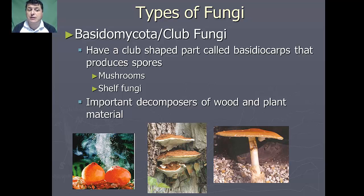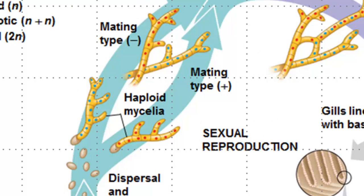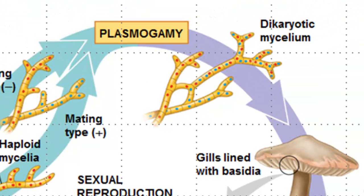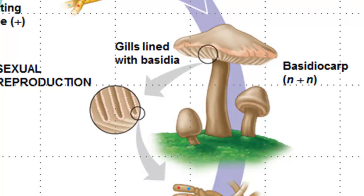These are very important decomposers of wood and plant material. Reproduction in our basidiomycota is primarily sexual. Two haploid mycelia of different types, the plus and the minus, are going to undergo plasmogamy and fuse, forming a dikaryotic mycelium. These dikaryotic mycelium are going to grow faster than and ultimately overcrowd the haploid parents. Environmental cues such as rain or a change in temperature will cause the dikaryotic mycelium to form compact masses that will develop into basidiocarps, like mushrooms.